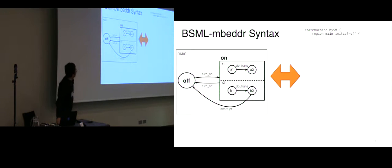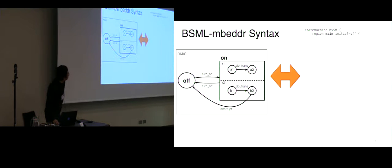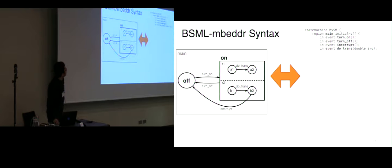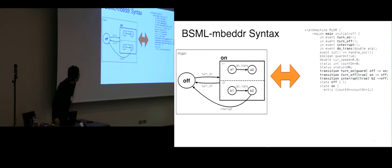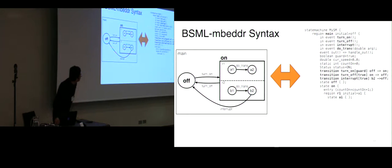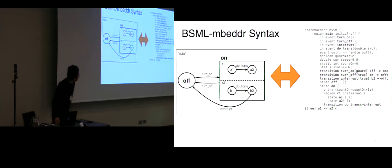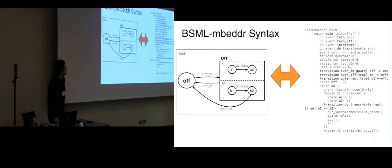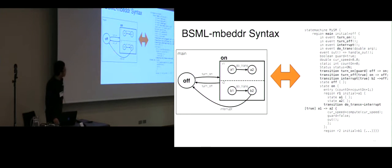On the right side is the code. First, we have a state machine defined whose name is MySM, under which we have the main region whose initial state is the off state. Then we define some events, some variables, and some transitions. Under the on state, we define the entry block and then concurrent region 1. Within region 1 we have state A1, state A2, and another transition. The transition is associated with an action, so that whenever the transition is executed, the action is also going to be executed. And then region 2.